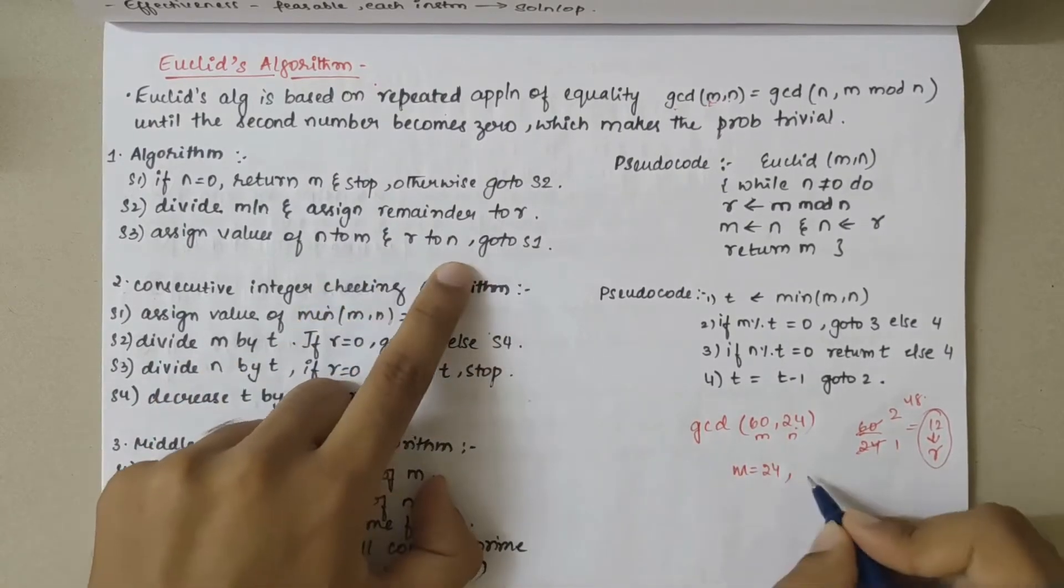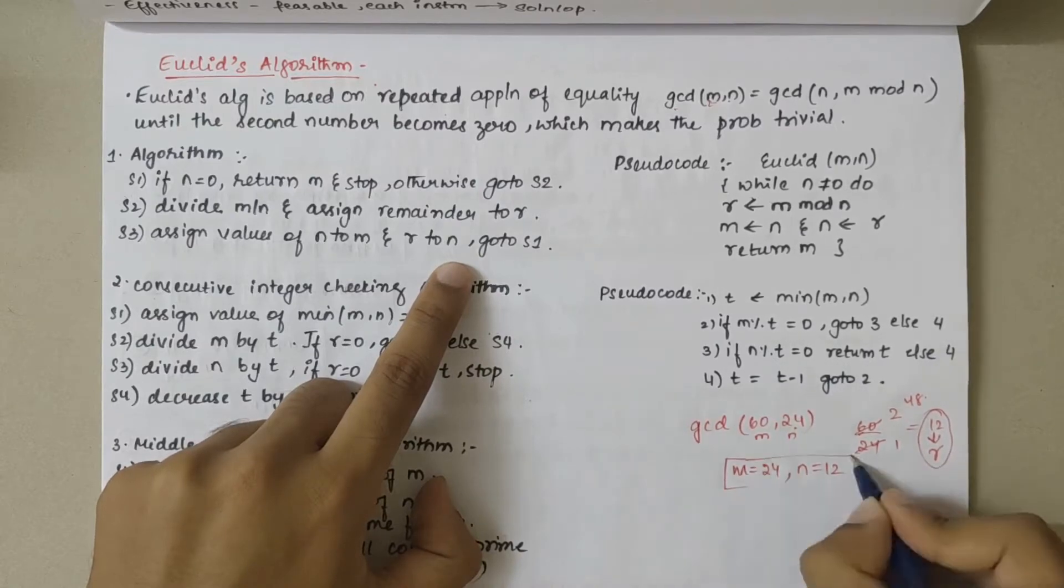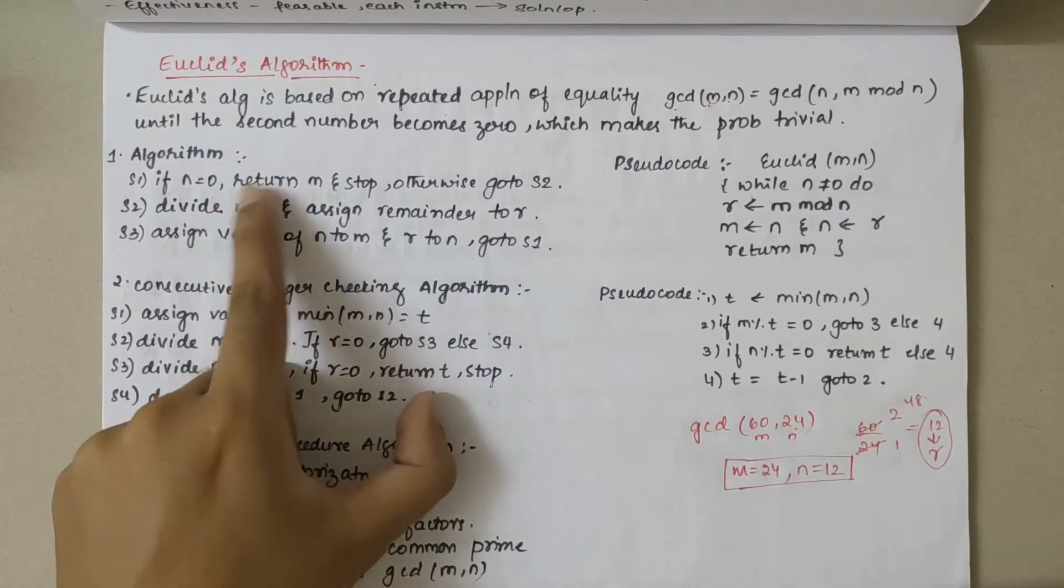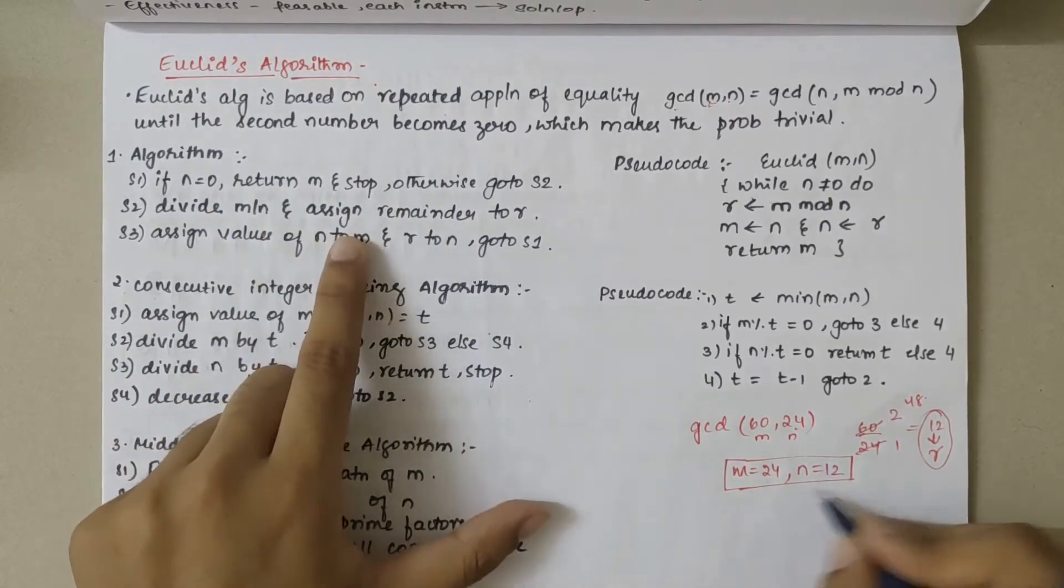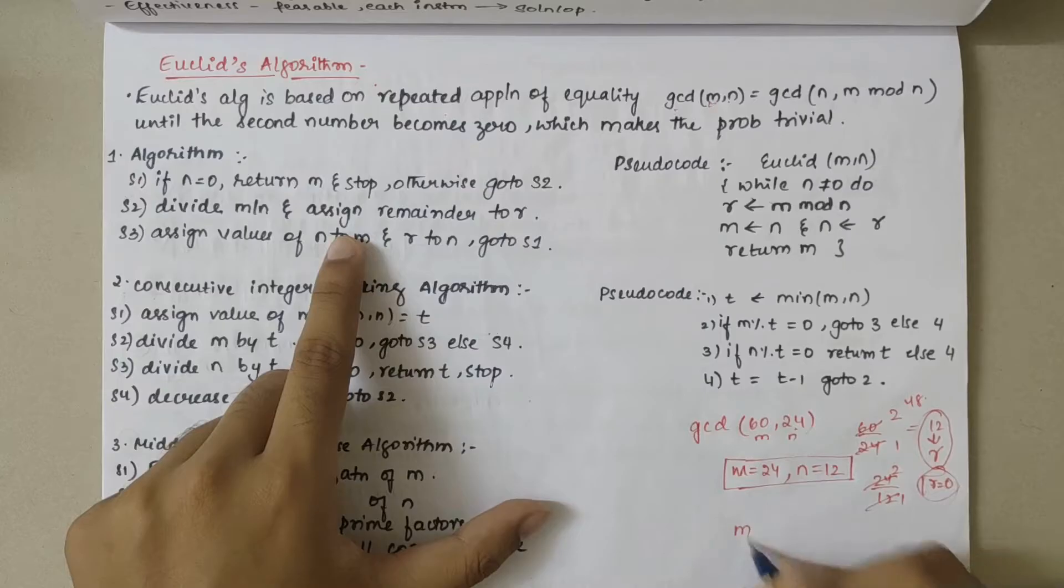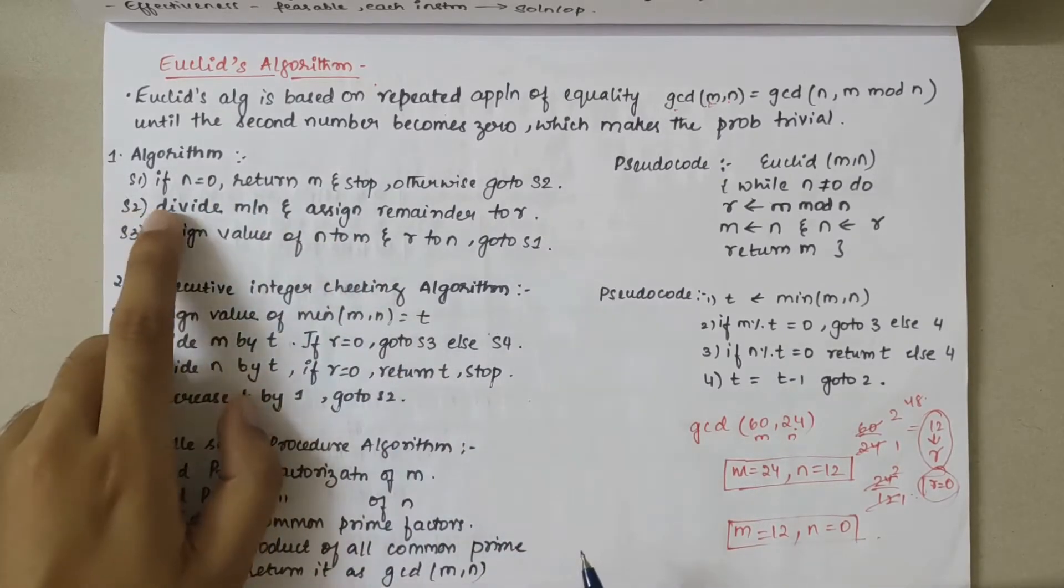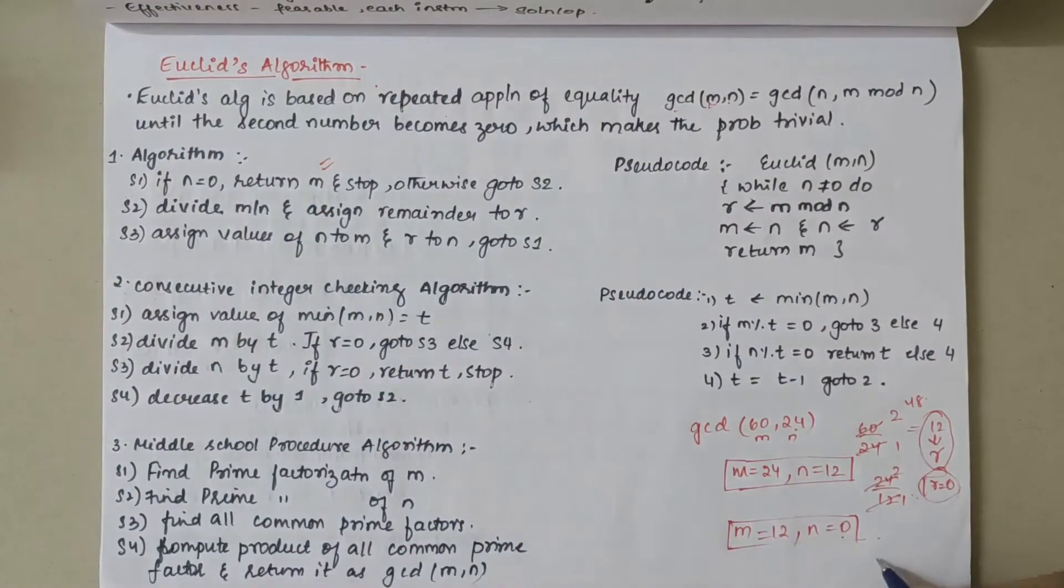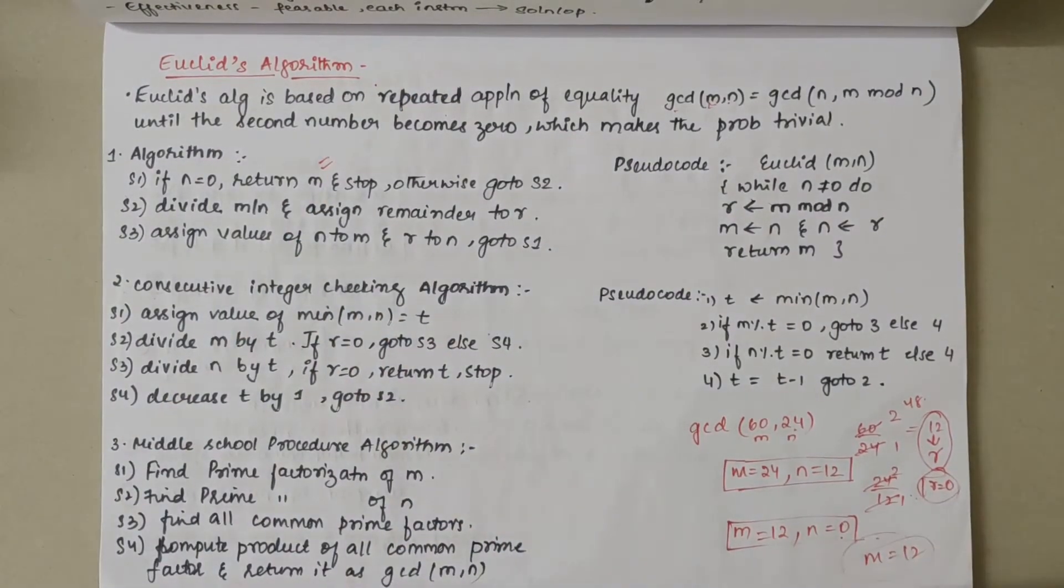Now with updated values, again go to step one. Check if n is zero - no, go to step two. Divide m by n: 24 by 12, reminder becomes zero. Update values: m will be n, that is 12, and n will be zero. In the third iteration, first step says if n is 0, return m. So m value is 12. GCD of 60 comma 24 is 12.